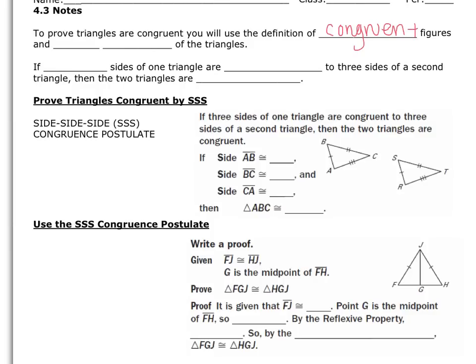For today, we're going to be using the side lengths of triangles. There are five different ways to prove triangles congruent; today we're just going to use one and build from there. The one we're using is side-side-side, abbreviated SSS. When three sides of one triangle are congruent to three sides of a second triangle, the two triangles are congruent.